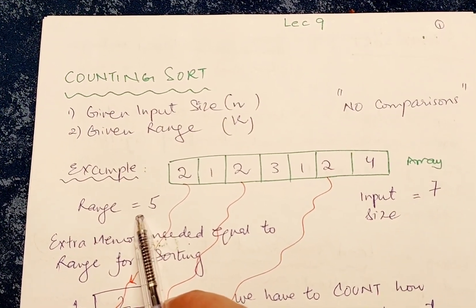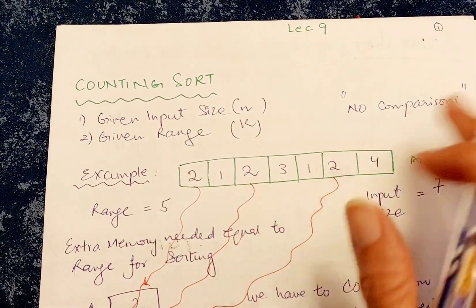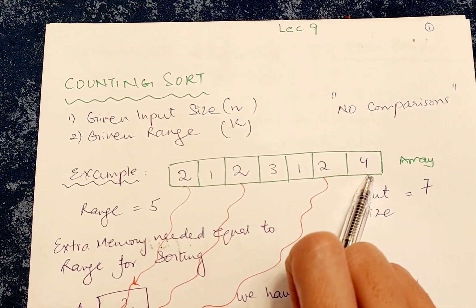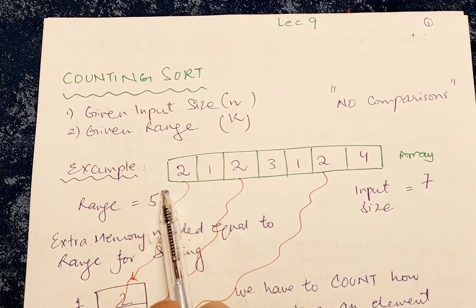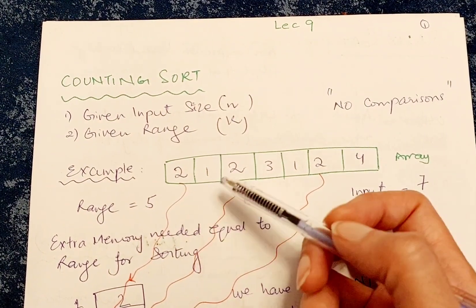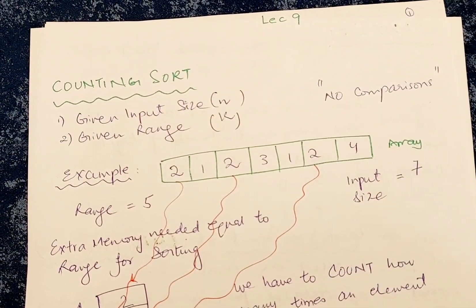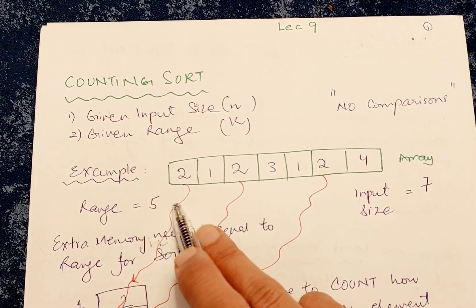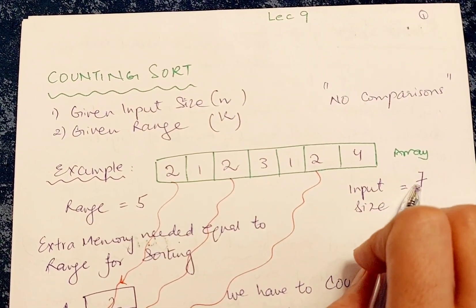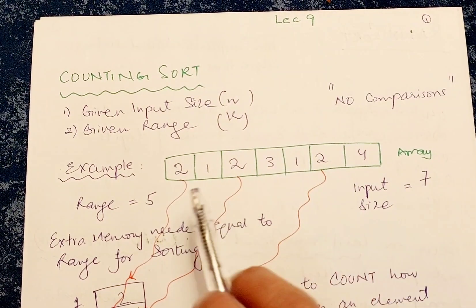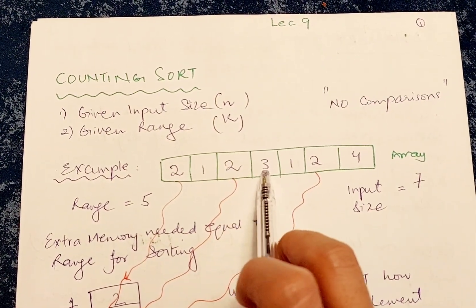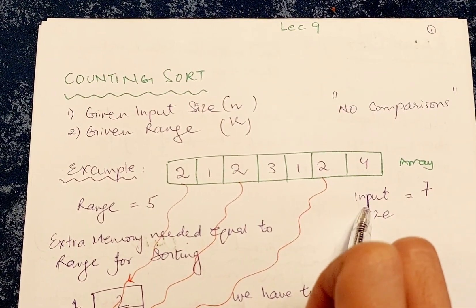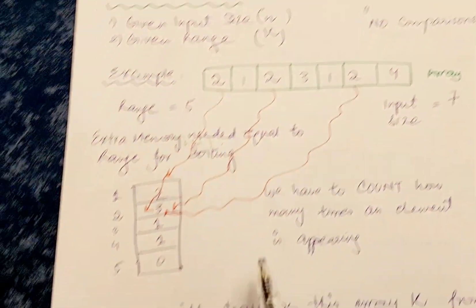Range means up to which number the values go. You can see that in this array the range is actually four — we have no number larger than four — but the question says the range is five, perhaps because they want to allow for a number five to be added later. This is given information in the question. If it is not given, you can simply count the elements in the array to get the input size.